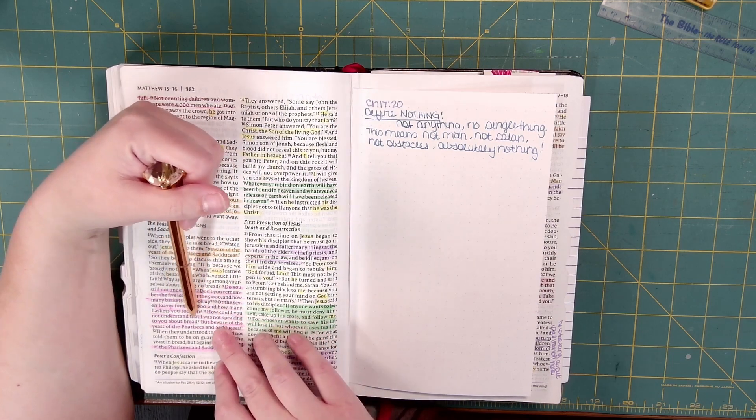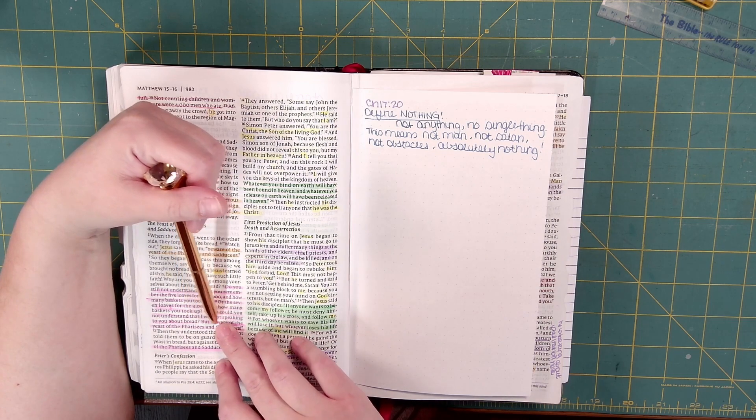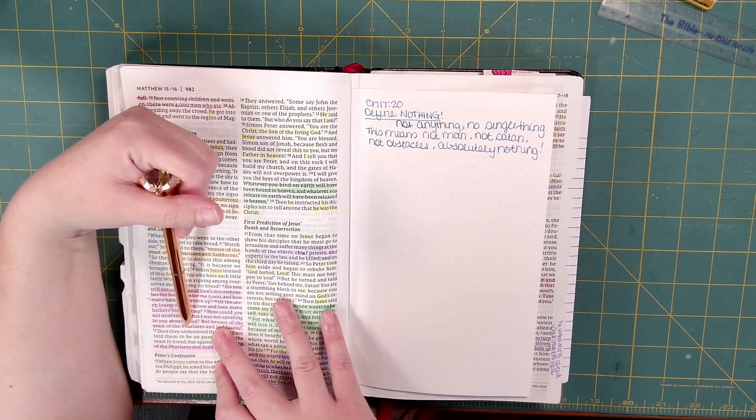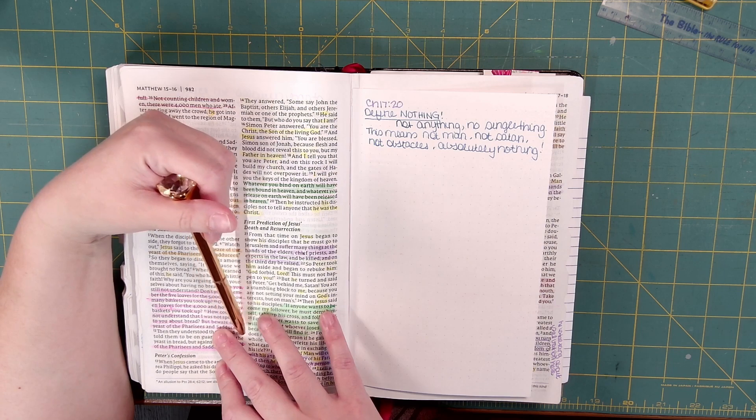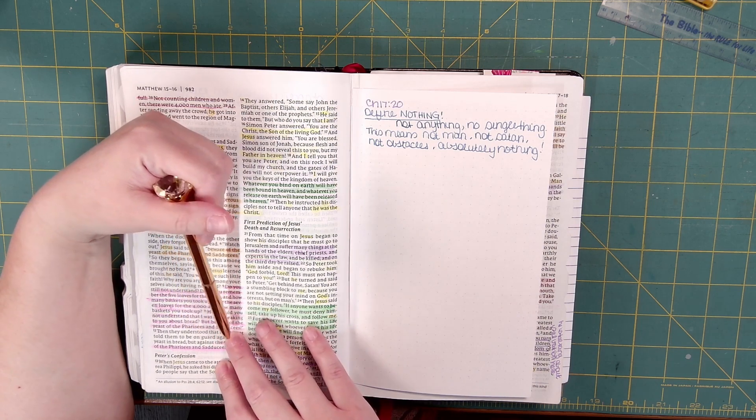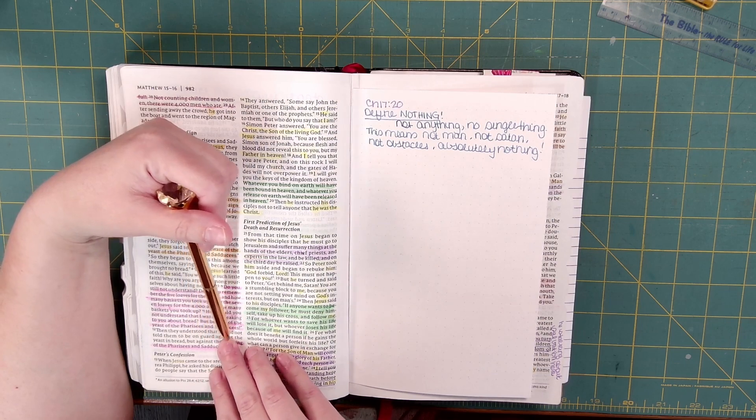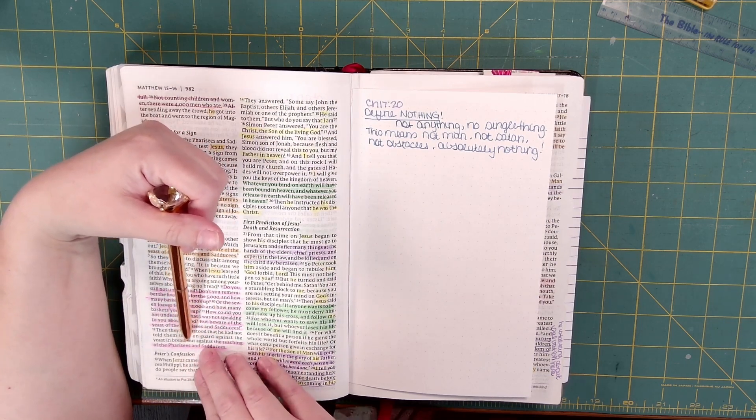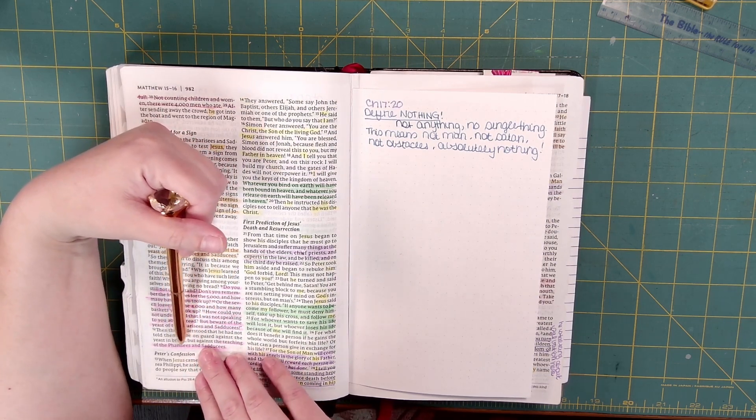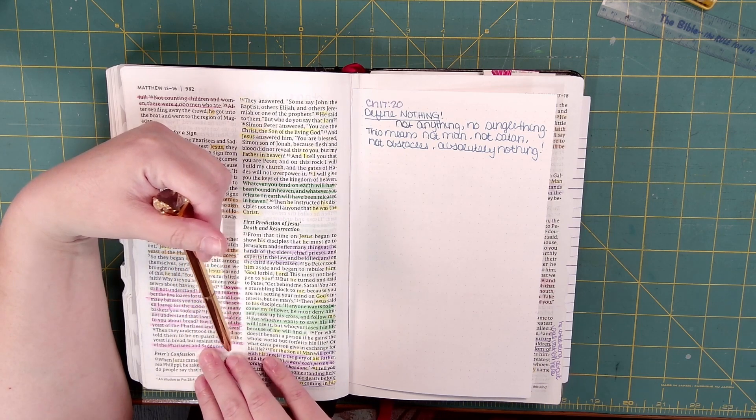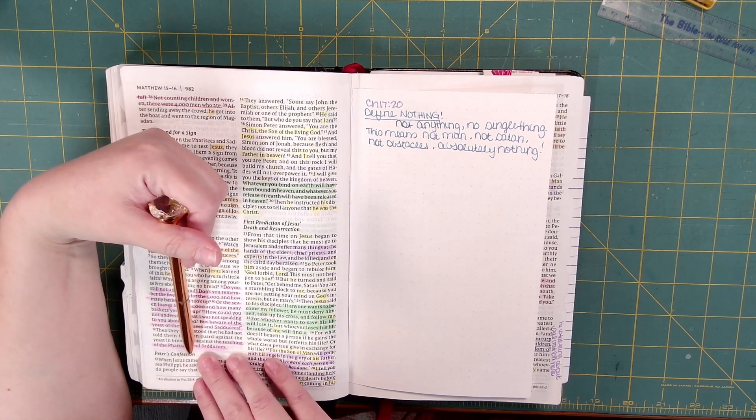How could you not understand that I was not speaking to you about bread? But beware of the yeast of the Pharisees and Sadducees. Then they understood that he had not told them to be on guard against the yeast in bread, but against the teaching of the Pharisees and Sadducees.